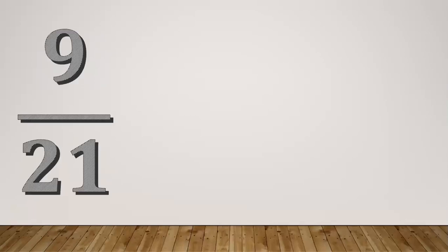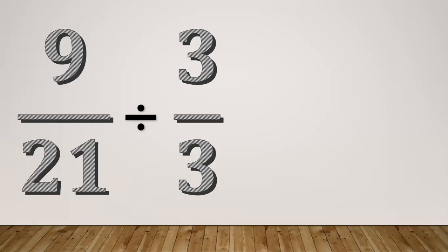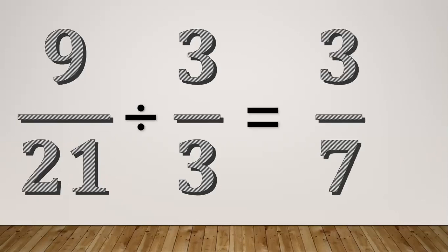Another example: 9/21 is divisible by 3. So 9 divided by 3 equals 3, and 21 divided by 3 equals 7. The answer is 3/7.